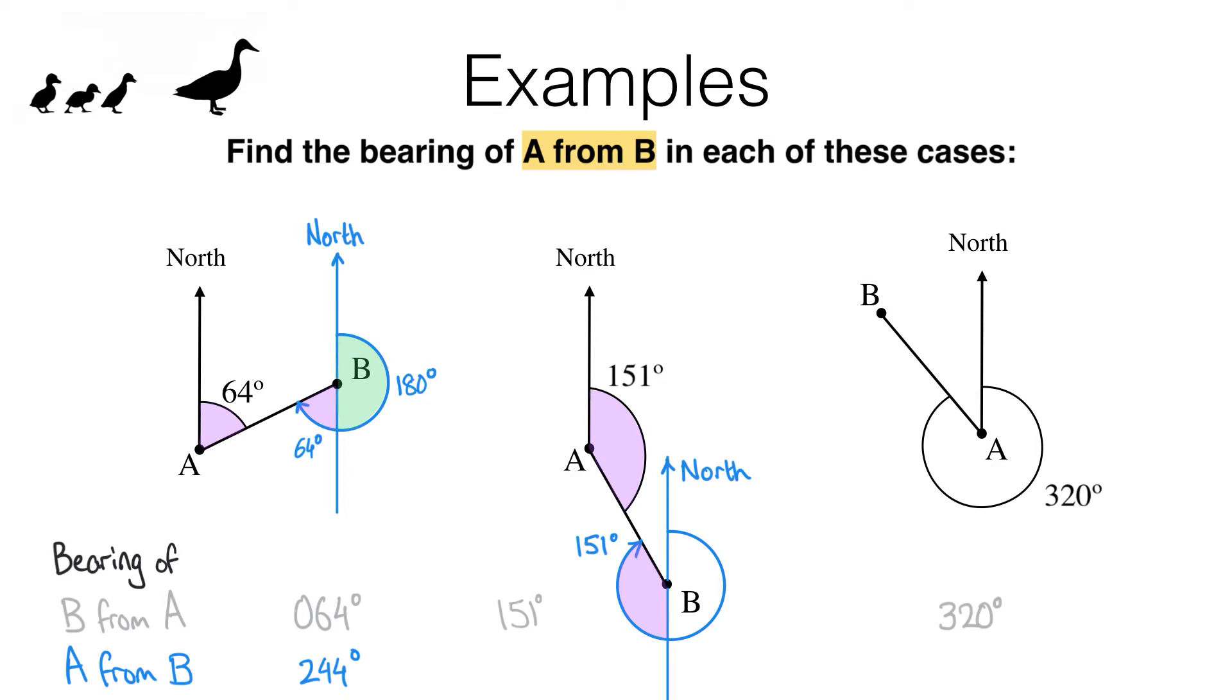And that means the angle we are looking for is 180 plus 151, and that gives us a bearing of 331 degrees.